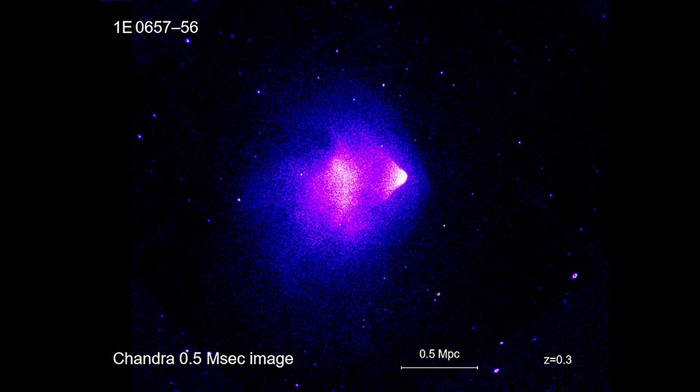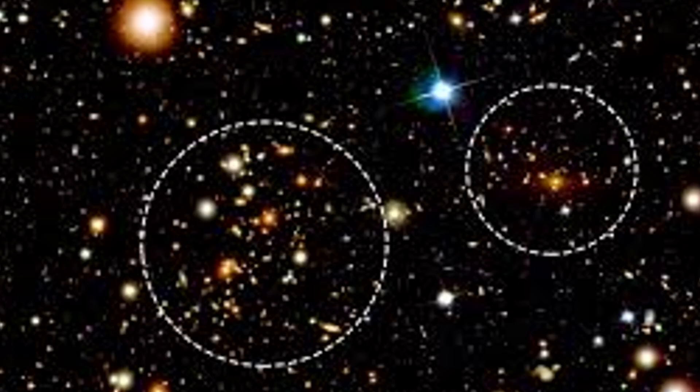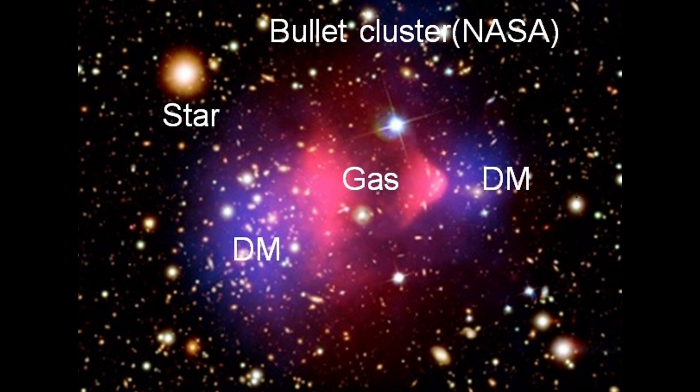In 2006, a powerful cosmic event provided one of the clearest pieces of evidence for dark matter: the bullet cluster. The bullet cluster is the result of a collision between two galaxy clusters located over 3.7 billion light-years away. This violent event allowed astronomers to observe how dark matter behaves during such collisions.